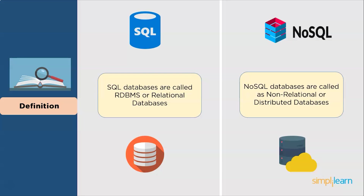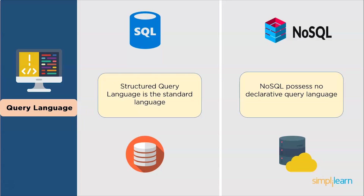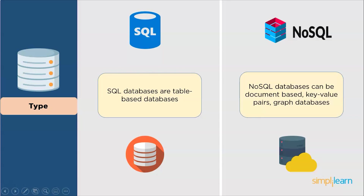Now we compare both technologies. In terms of definition, SQL databases are primarily called RDBMS or relational databases, while NoSQL databases are called non-relational or distributed databases. For query language, SQL stands for Structured Query Language and is the standard language for SQL, whereas NoSQL databases have no declarative query language. In terms of type, SQL databases are table-based, while NoSQL databases can be document-based, key-value pairs, graph databases, and much more.